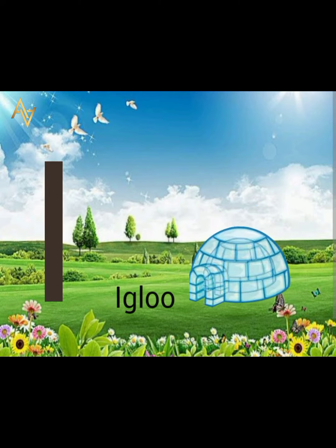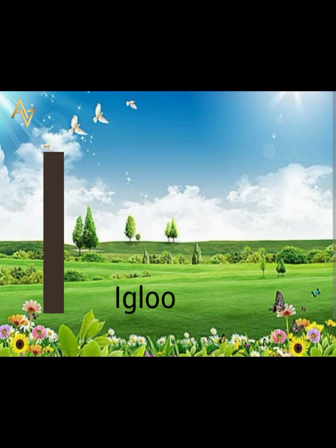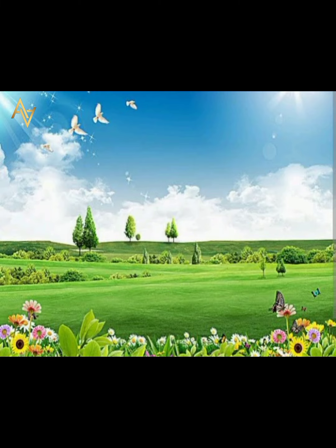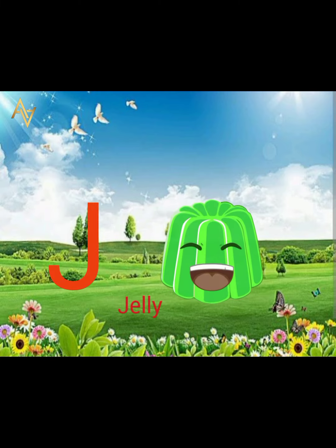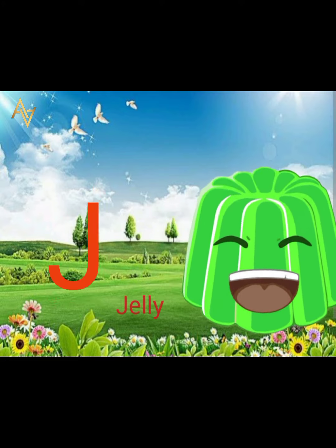I is for igloo. I, i, igloo. J is for jelly. J, j, jelly.